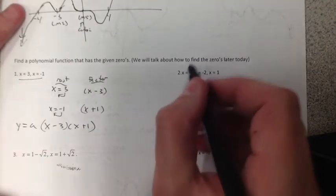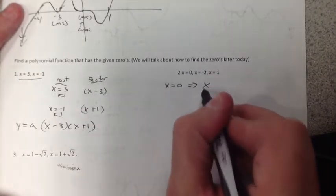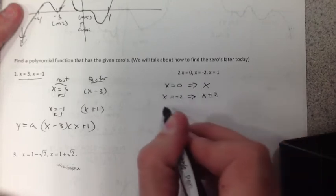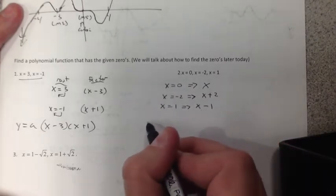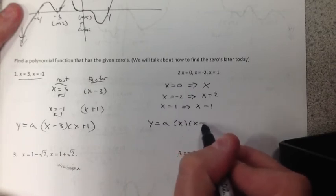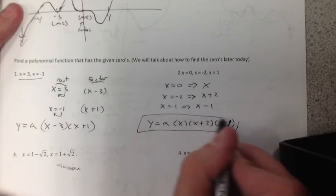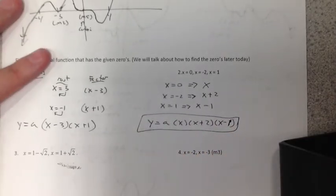So let's go and try number 2. x equals 0, that just becomes just x. x equals negative 2, in factor form, that's x plus 2. x equals 1, becomes x minus 1. And I just multiply them together. A, don't forget your A, x, x plus 2, x minus 1. Don't be a hero. Don't multiply them out. You don't need to.